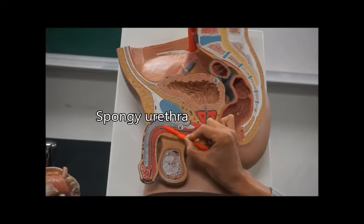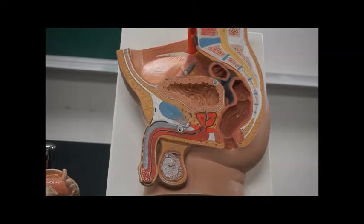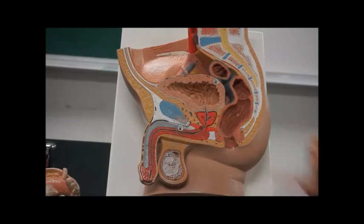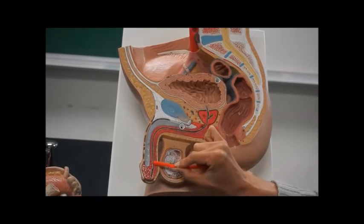The spongy urethra runs the length of the penis. The urethra is also the area where you have semen being ejaculated to pass out.